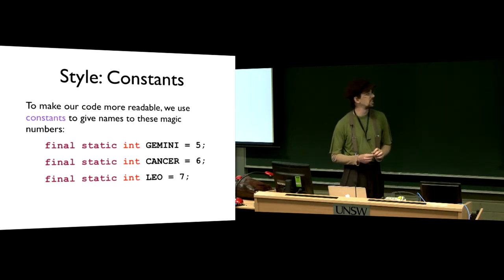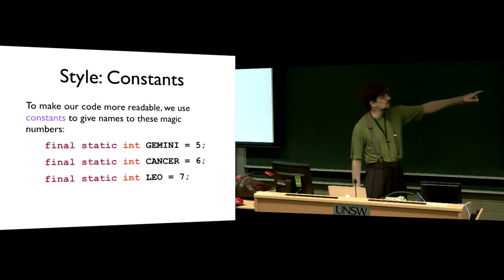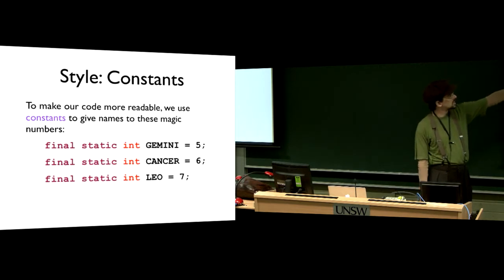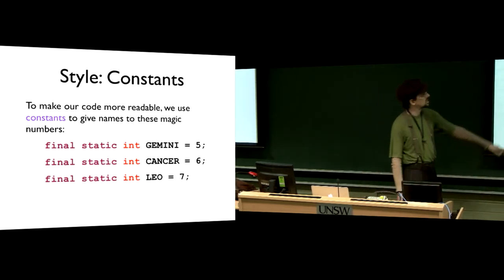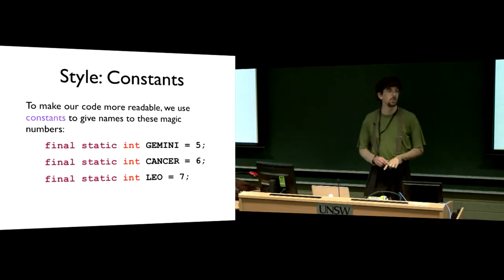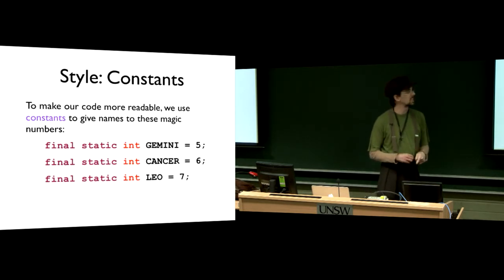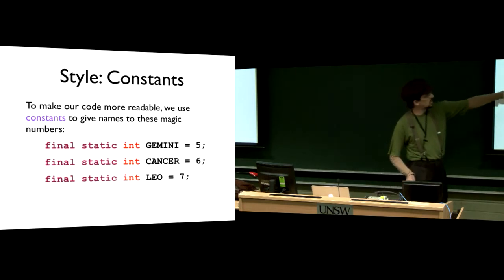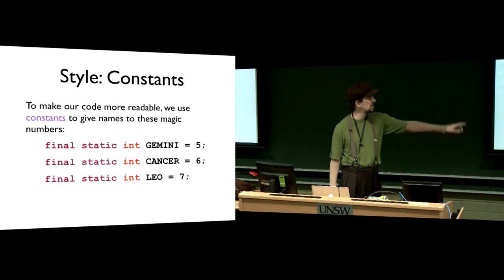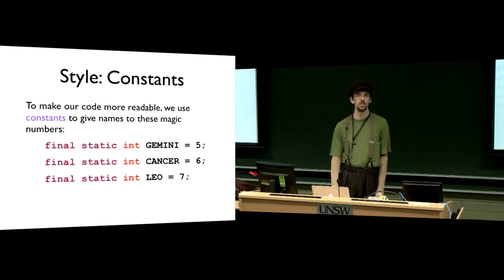The solution I showed you for this was to actually give names to these constants. The way we named the constants was by making a kind of declaration at the beginning of our code, where we said that Gemini was equal to 5. Gemini is an integer. Our constants are all in capital letters to distinguish them from other variables and to make it clear that Gemini is not a variable that can change, but a constant that can't change. Then we have this keyword at the beginning: final and static. This is specifically how we distinguish just a general variable from a constant.